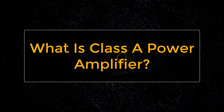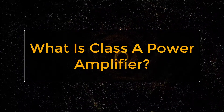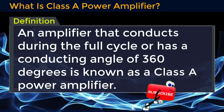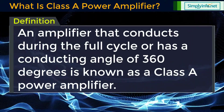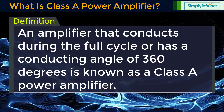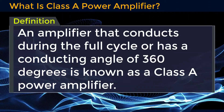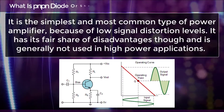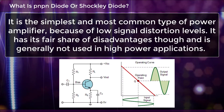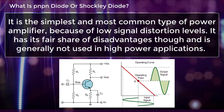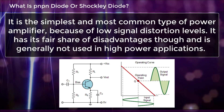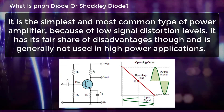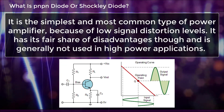What is a class A power amplifier? An amplifier that conducts during the full cycle, or has a conducting angle of 360 degrees, is known as a class A power amplifier. It is the simplest and most common type of power amplifier because of low signal distortion levels. It has its fair share of disadvantages though, and is generally not used in high power applications.